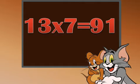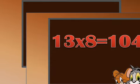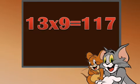13 sevens are 91. 13 eights are 104. 13 nines are 117.